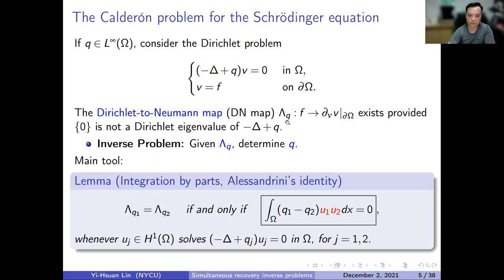The DN map goes from Dirichlet data to Neumann data. Knowing the DN map under Q is the inverse problem. For the forward problem, if Q is known and F is known, we can solve V. But for the inverse problem, we want to find the potential Q — a coefficient — by knowing the Dirichlet-to-Neumann map.